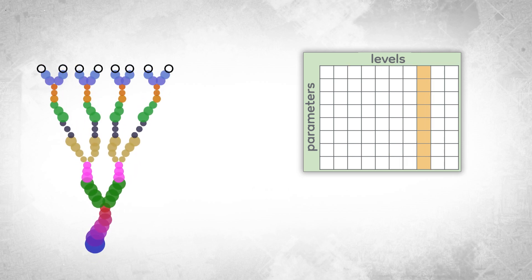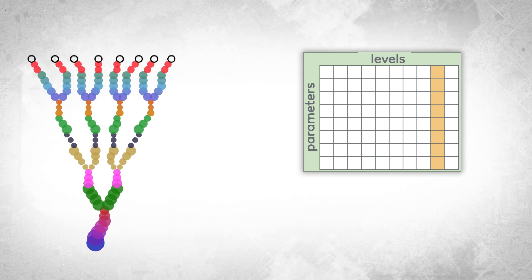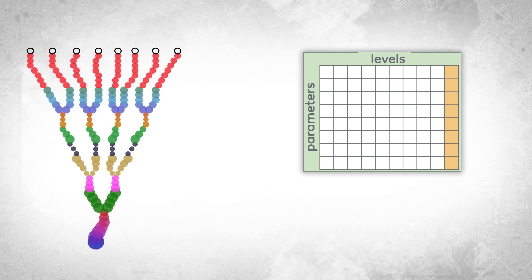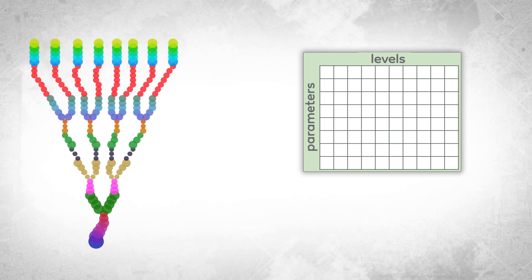Upon completing their designated steps, they may generate third-level agents, continuing the process. However, agents at the tenth level do not create offspring. Now let's explore our circle drawing technique.